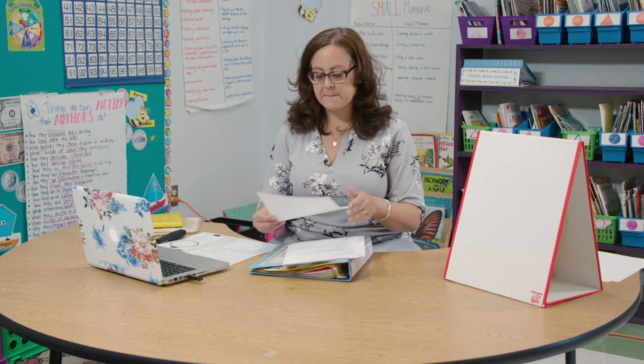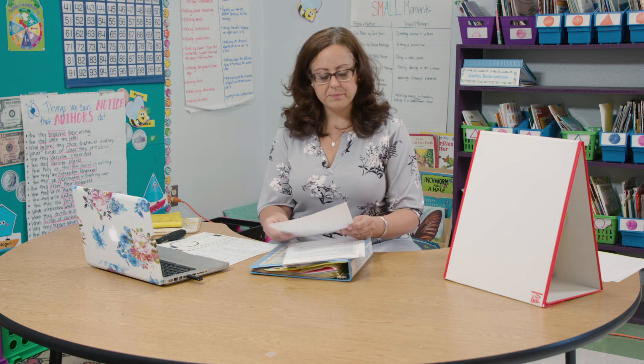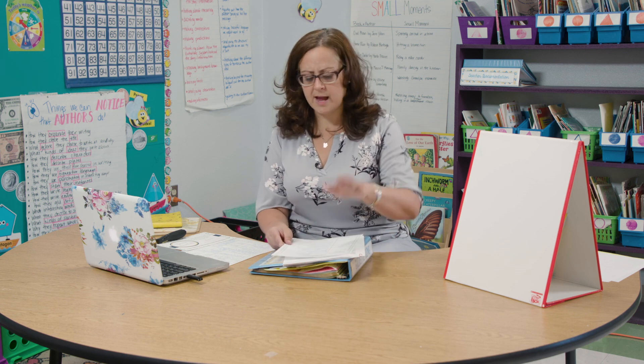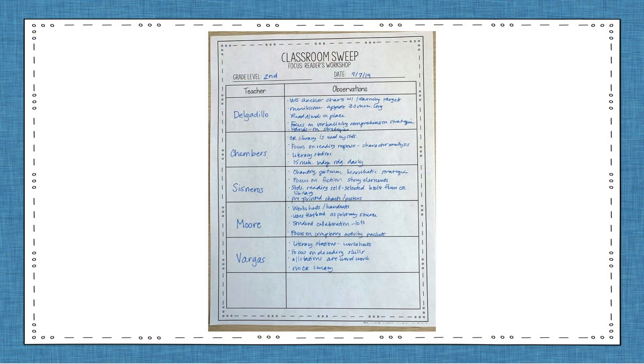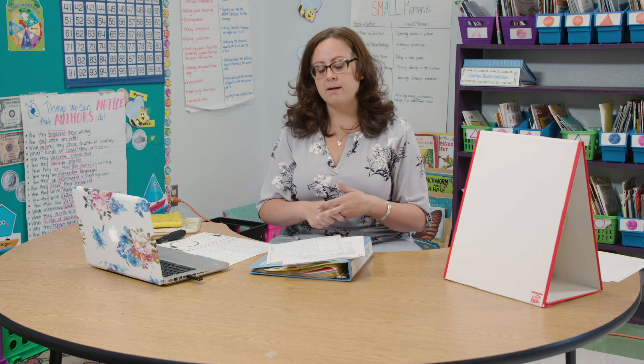So let's say that one day I'm going to visit classrooms on my campus. I take my classroom sweep document — I have one for each grade level, and again this is in your freebie — and I record the teacher names down the side and then I just record notes about what I see happening. I want to spend probably around 15 to 20 minutes in each classroom if that is possible. I know that's a long time when you're visiting a lot of classrooms, so you may not always be able to do that, but you want to really see what's going on.